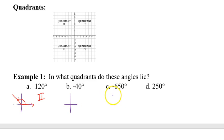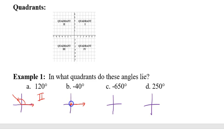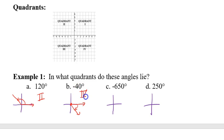For negative 40 degrees: initial side on the positive x-axis, vertex at the origin. Negative means clockwise, so we go downward. Going all the way to the y-axis would be negative 90; 40 degrees is not that much, so you end up just a little ways in — that's quadrant four. We're just identifying the quadrant, so the drawing doesn't have to be perfect.